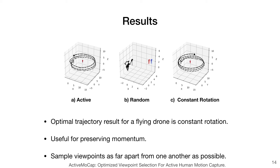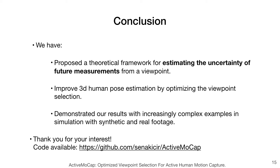Discovering the optimal trajectories where there are obstacles is an avenue for future work. We have proposed a theoretical framework for estimating the uncertainty of future measurements from a viewpoint. This permits us to improve 3D human pose estimation by optimizing the viewpoint selection to visit those locations with the lowest expected uncertainty. We have demonstrated with increasingly complex examples in simulation with synthetic and real footage that this theory translates to closed-loop drone control and improves pose estimation accuracy. Thank you for listening.